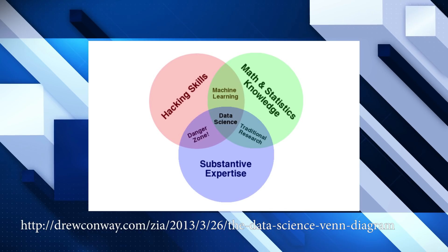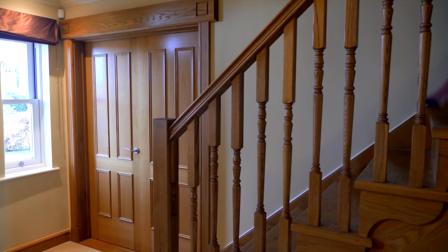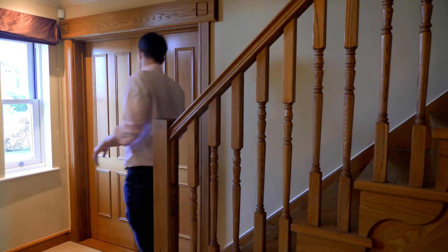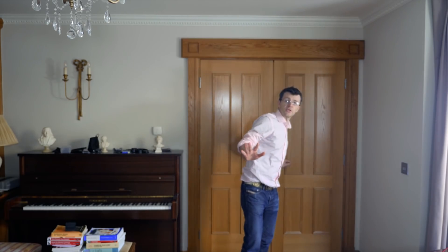It's summed up well by this Venn diagram created by Drew Conway. Data scientists also know how to do a whole host of other things. They know how to ask the right questions of their data, how to do great data visualizations, how to clean their data, and importantly, they know how to communicate their findings about the data to non-data scientists.